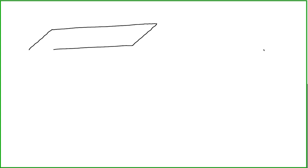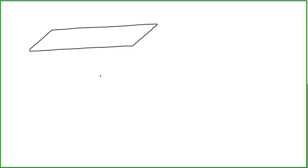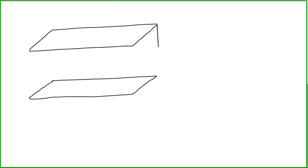Let's begin by sketching our capacitor. Our capacitor consists of two plates separated by a distance d. Let's space these plates further apart so we have more room to visualize. These plates are separated by a distance d. In this picture I'm exaggerating the separation distance; however, let's assume that the separation distance is small when we compare it to the size of the plates.